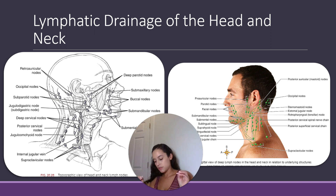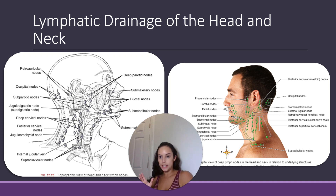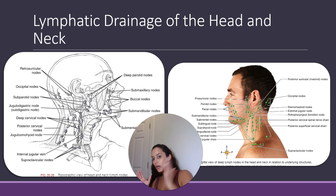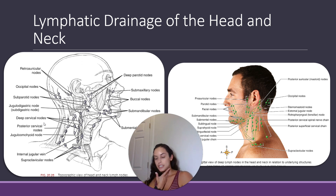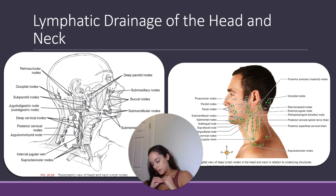Your deep cervical nodes consist of about 20 to 30 nodes all along the carotid sheath and around the internal jugular chain. They essentially hug your jugular vein, as shown in this picture where they cut the sternocleidomastoid muscle — coming from the mastoid to the sternum and clavicle — so you can see beneath it. Below that muscle you find the jugular veins, and hugging them are the deep cervical nodes, which is where all the superficial groups drain into.